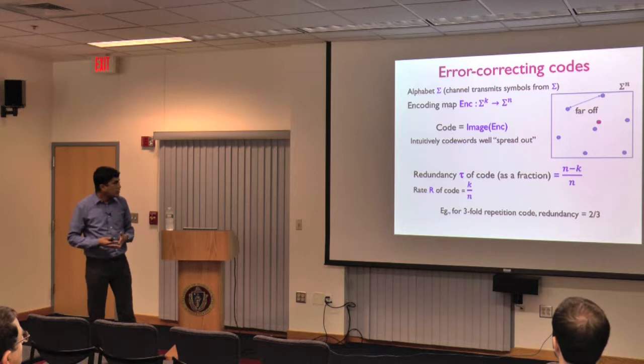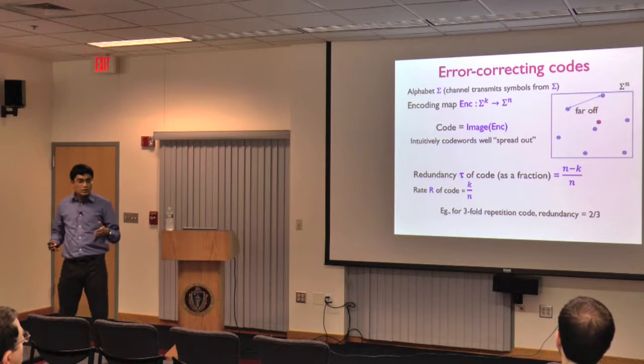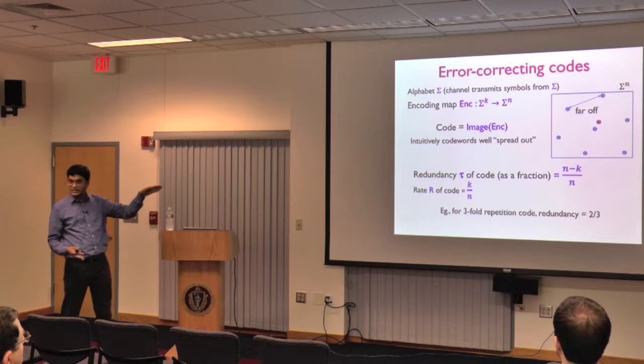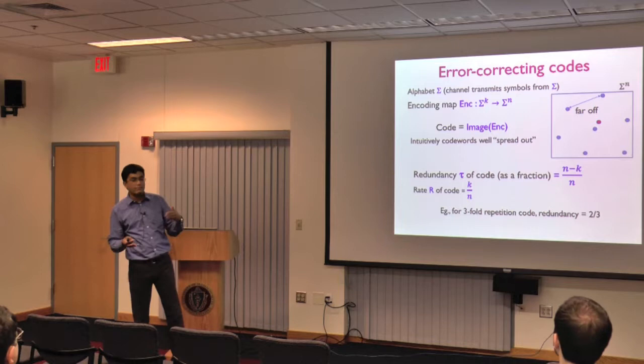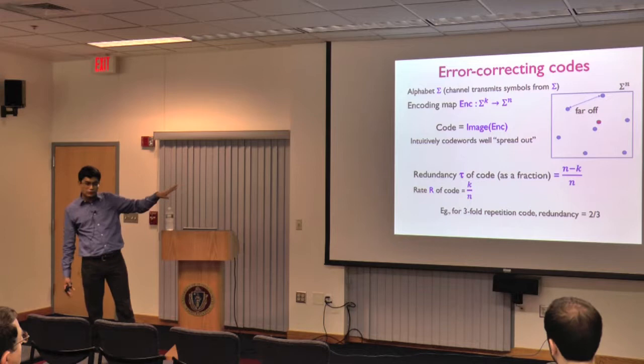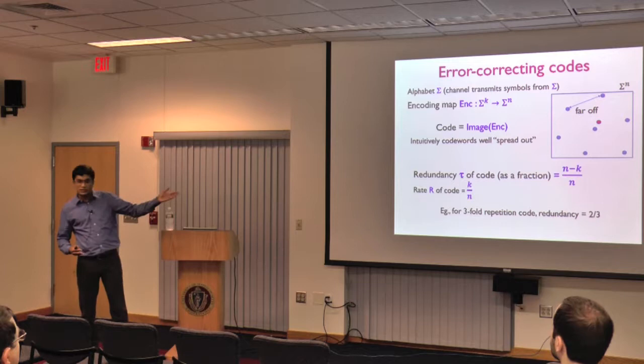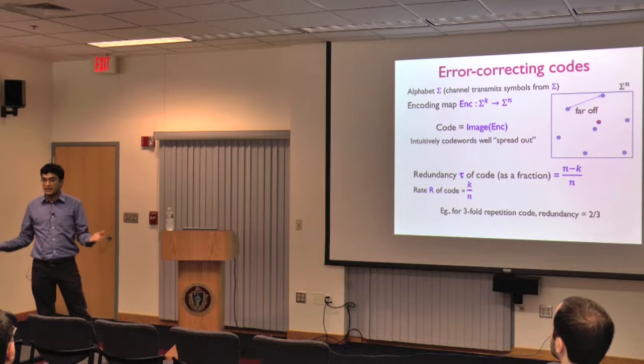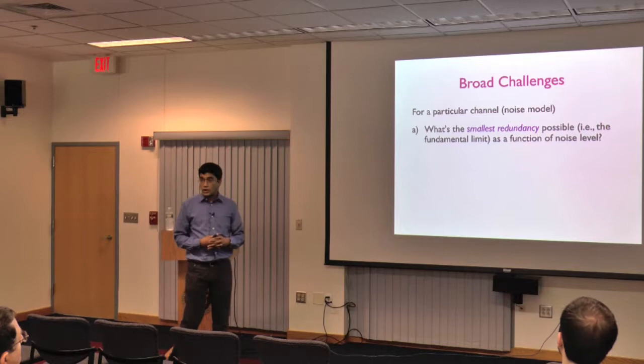Redundancy is measured as a normalized quantity: there are K true information symbols amongst N symbols, so redundancy is (N minus K) divided by N. Rate is 1 minus redundancy. You try to minimize redundancy. For the threefold repetition code where K=1 and N=3, the redundancy is two-thirds — two-thirds of your symbols are redundant, there only to protect data against errors.